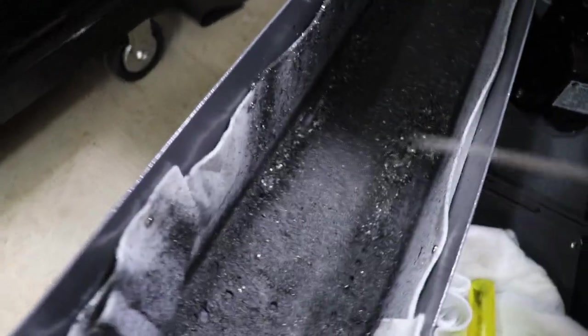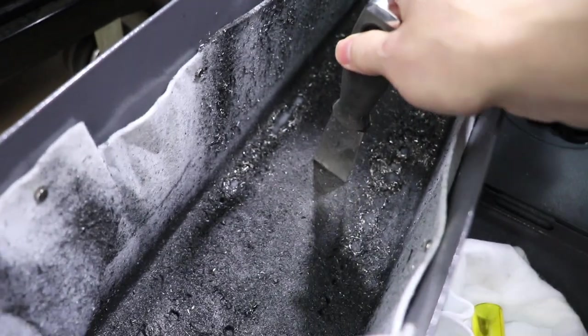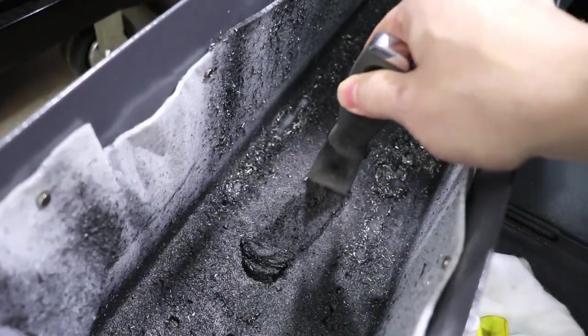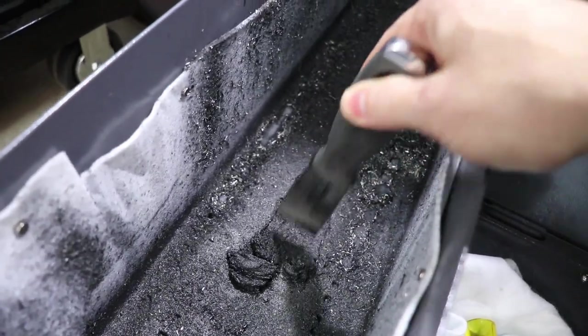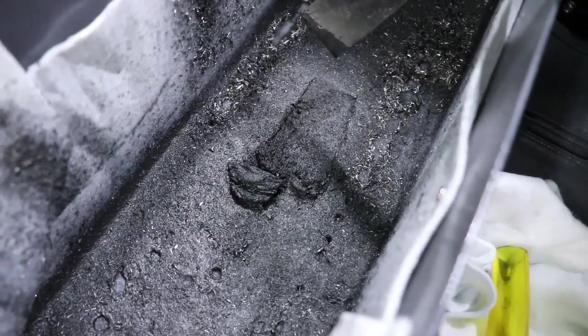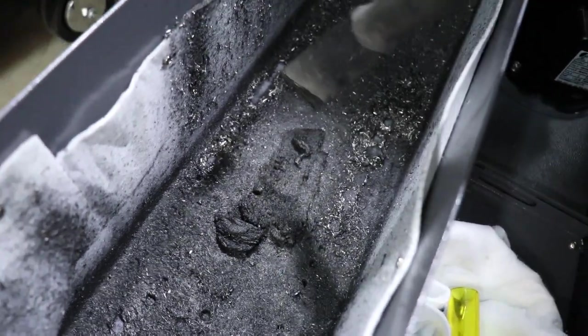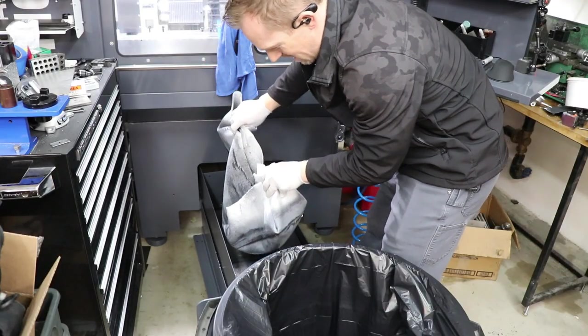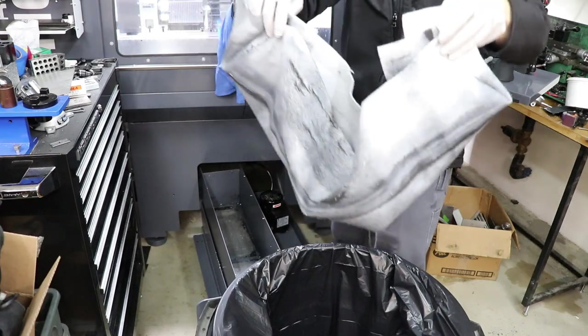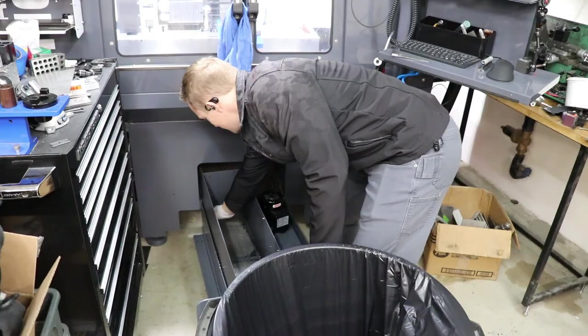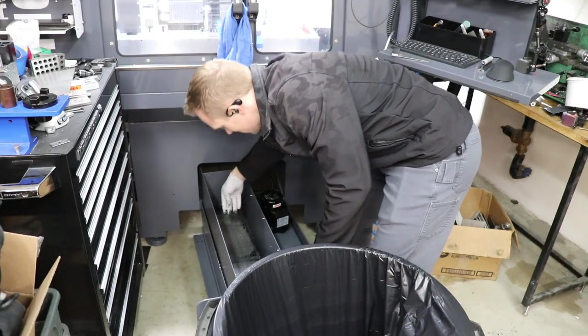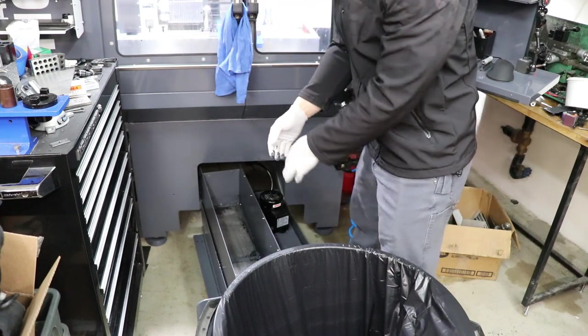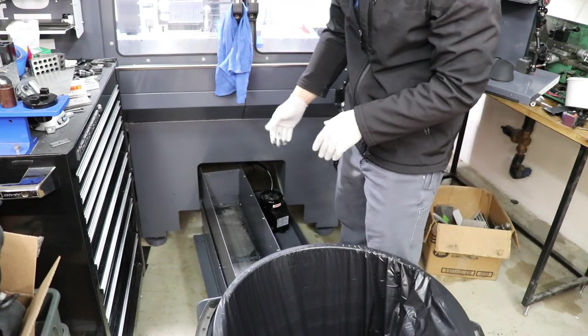After machining a bunch of composite this is what you end up with in the first stage of the filter. Just a slurry of composite dust. Got to change this out. One of the really nice things about having it set up this way with the felt in here is I can just pick it up to clean it out. Sometimes there's a little bit left over in the bottom but it's generally pretty clean.